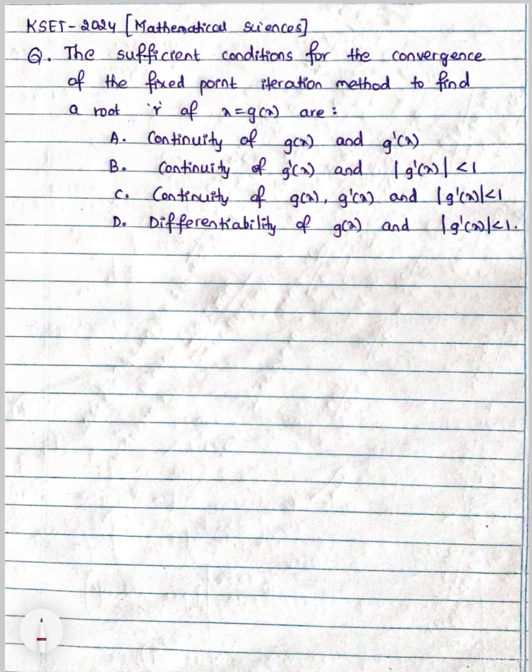Option A: continuity of g of x and g dash of x. Option B: continuity of g dash of x and mod of g dash less than 1. Option C: continuity of g of x, g dash of x, and mod of g dash less than 1. Option D: differentiability of g of x and mod of g dash less than 1.